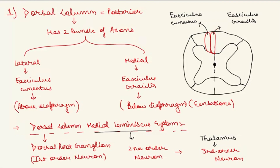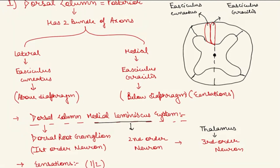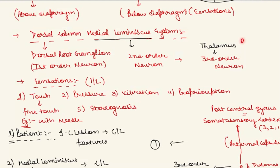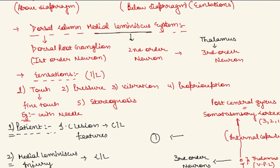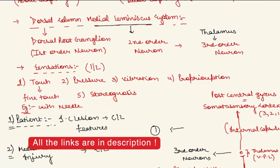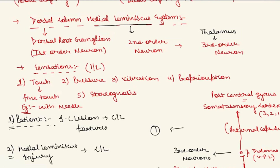Fasciculus gracilis is responsible for carrying sensations from the body below the diaphragm, and fasciculus cuneatus carries sensations from above the diaphragm. The dorsal column medial lemniscus system carries the sensations of touch, pressure, vibration, proprioception, and stereognosis — but majorly touch, pressure, and vibration present clinically. The touch here is fine touch — for example, if someone pricks you with a needle, that is fine touch.